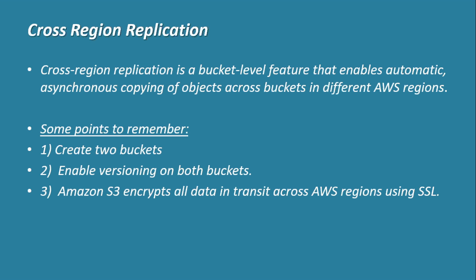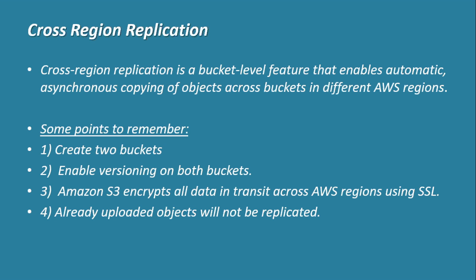Third, you do not need to worry about security when data traverses across different regions. AWS takes care of that and encrypts data in transit using SSL — Secure Socket Layer. Fourth, remember that any data already present in the bucket before you enable cross-region replication will not be replicated. Only new objects uploaded after enabling it will be replicated.